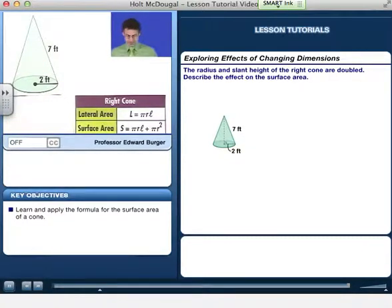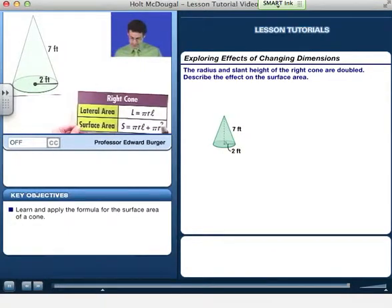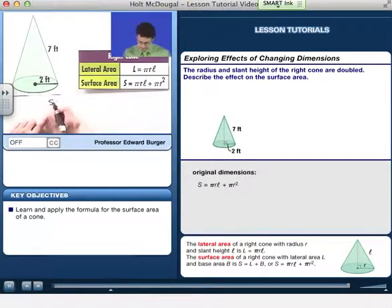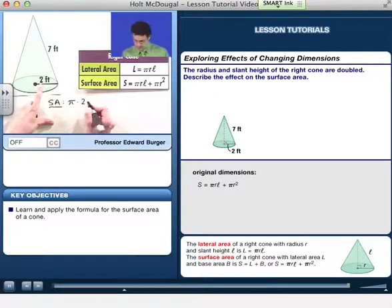All right, so first let's find the surface area as is. So the surface area, we know how to do that. First we find the lateral area, which is going to be πr, in this case 2. Slant height is given to be 7, and so I see this is going to be 14π.